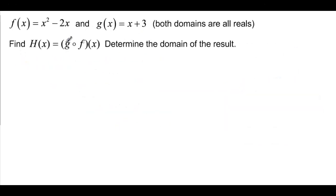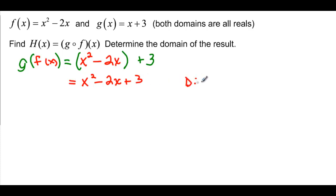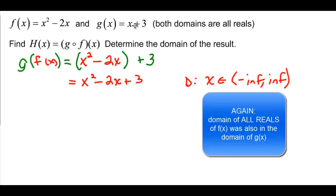Given those same two functions, find h of x which is g composed with f. If you rewrite it, it's g composed with f of x. The g function has x plus 3, and the f function inside it is x squared minus 2x. So plugging f into g, we find that we get x squared minus 2x plus 3. The domain has x as an element of all reals. Since f has a domain of all reals and g has a domain of all reals, when you put one inside the other you can still have all reals.